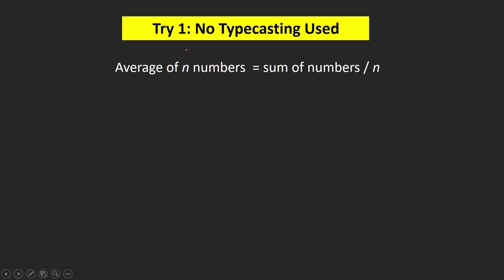So let's see our first approach. In this approach we will not use any typecasting. As you know, the average of n numbers is sum of all those n numbers divided by n. So let's write the program in our IDE and see whether we are getting the correct solution or not.